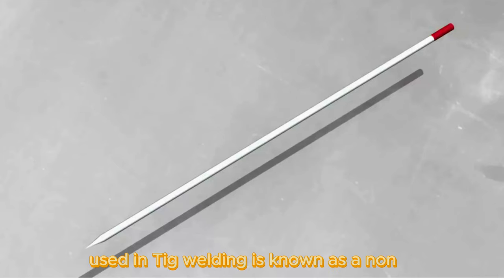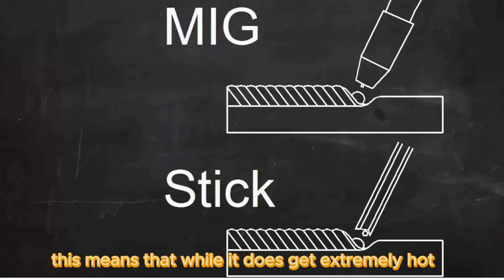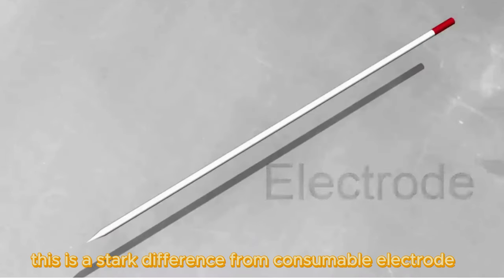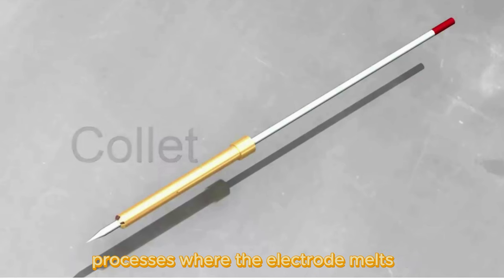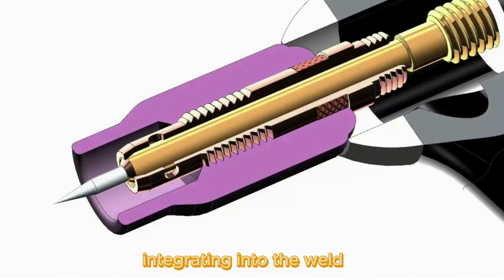The tungsten electrode used in TIG welding is known as a non-consumable electrode. This means that while it does get extremely hot during welding, it does not melt and mix into the weld pool. This is a stark difference from consumable electrode processes, where the electrode melts and serves as filler material, integrating into the weld.